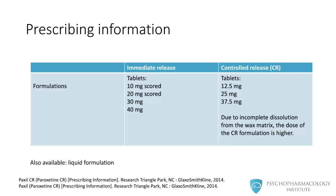In this table, we can see the most relevant differences between the two formulations. The immediate release formulation is available as scored tablets of 10 mg, 20 mg, 30 mg, and 40 mg. Controlled release paroxetine is available in tablets of 12.5 mg, 25 mg, and 37.5 mg. The reason doses are different is that due to incomplete dissolution of the matrix of the controlled release version, the dose needs to be higher. There is also a liquid formulation available.